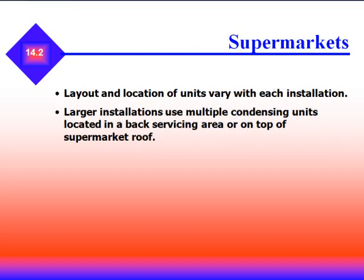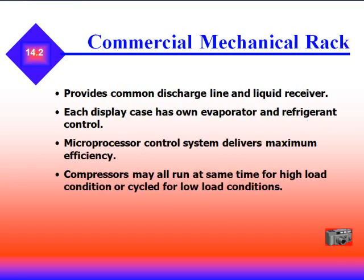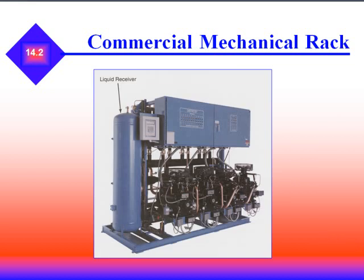In supermarkets, the layout and location of units may vary with installation. Larger installations use multiple condensing units located in the back servicing area or on top of the supermarket roof. Commercial mechanical racks provide common discharge line and liquid receivers. Each display case might have its own evaporator and refrigerant control. This is an example of a commercial mechanical rack — notice a single liquid receiver for three compressors on this rack.